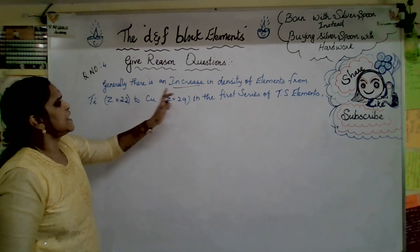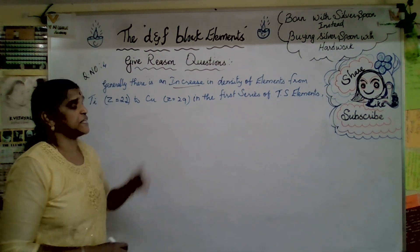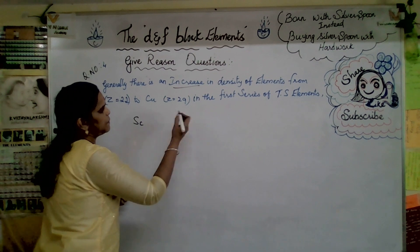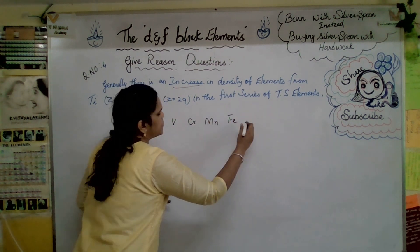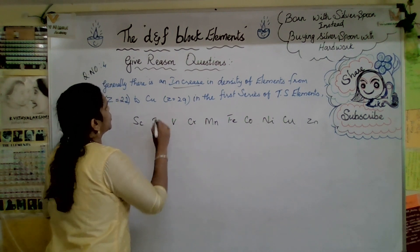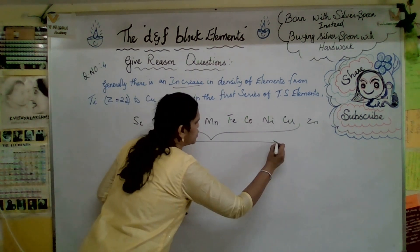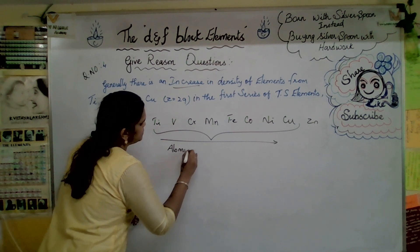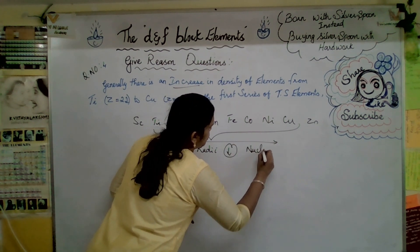The next important question: generally there is an increase in density of elements from titanium to copper in the first series of transition elements — why? The 3d series starts from scandium: Sc, Ti, V, Cr, Mn, Fe, Co, Ni, Cu, Zn. On moving from left to right, atomic radii decrease due to an increase in nuclear charge.